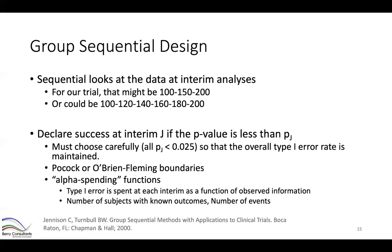With a group sequential design, our rule is to declare success at an interim if the p-value is less than some threshold that depends on the interim. We can't use the same 0.025 threshold at each analysis, because looking at data multiple times introduces a multiplicity. To control our type one error rate, we have to adjust the threshold at each interim.